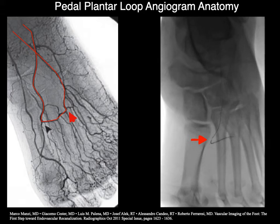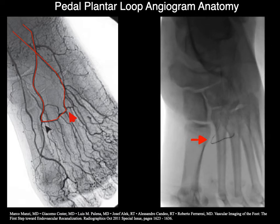You can then follow this to the base of the third or fourth metatarsal, depending on the obliquity or projection of the angiogram, where the second turn is back into the lateral plantar artery, and then ultimately into the posterior tibial artery. And there's your pedal plantar loop.